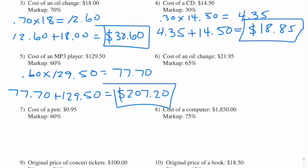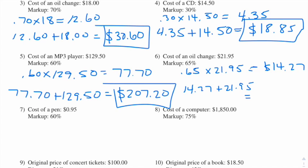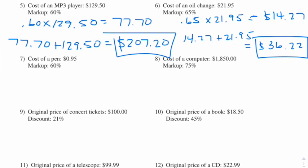Number six: the cost of an oil change is $21.95 and the markup is 65%. So we're taking 0.65 times 21.95 and we get $14.27 — rounding from 14.2675. We take $14.27 and add that to $21.95 and we get $36.22.